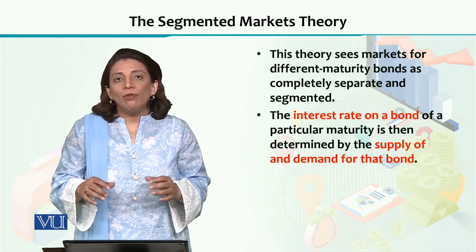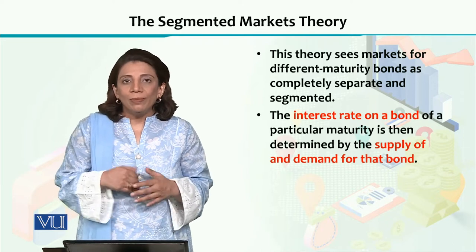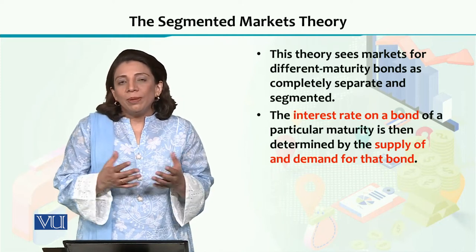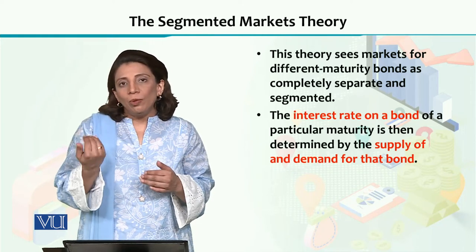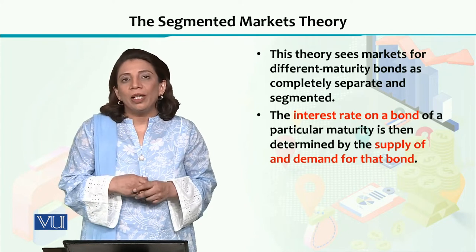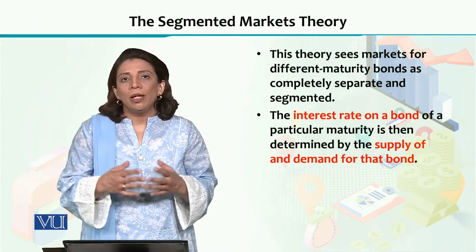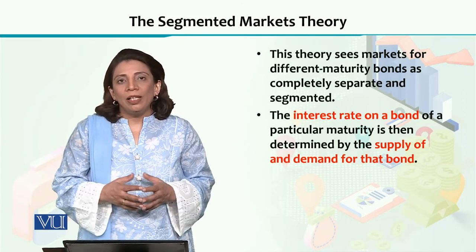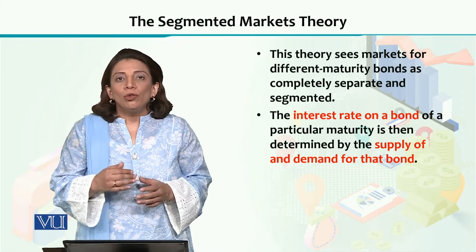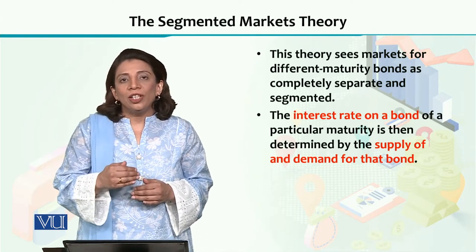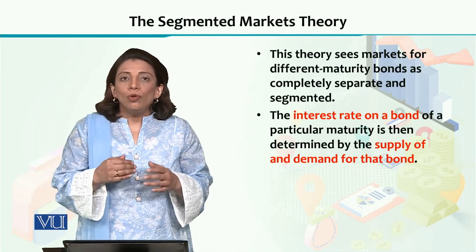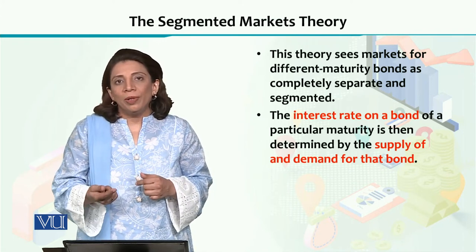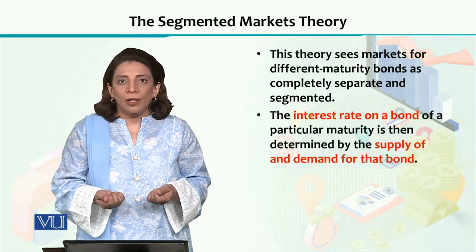The investors are also different, and their preferences are different. For example, suppose somebody is investing and they understand that they need money for 20 years — so that they can give it to their children when they grow up for good training. This kind of investor needs money for 20 years, so they want to invest in long-term maturity bonds, which will mature in 20 years.